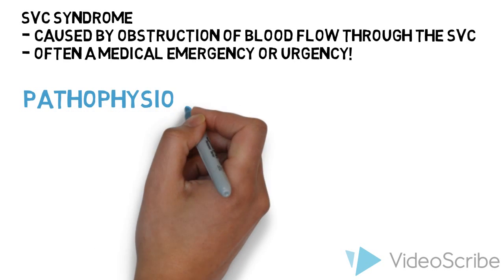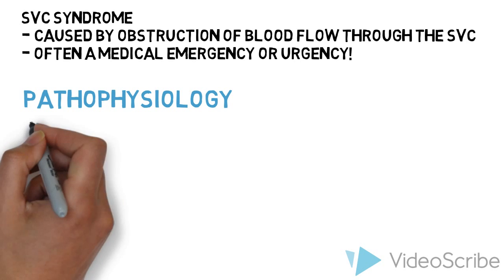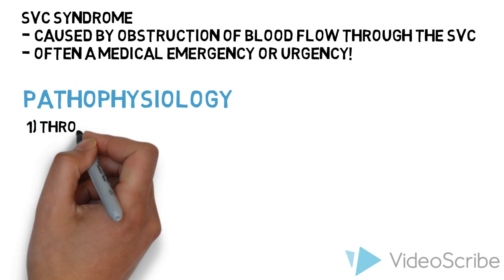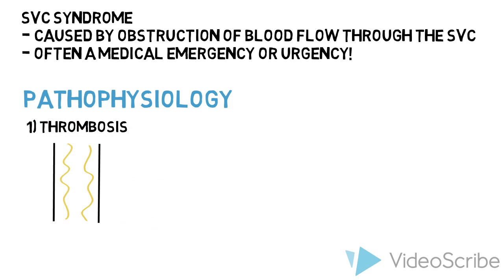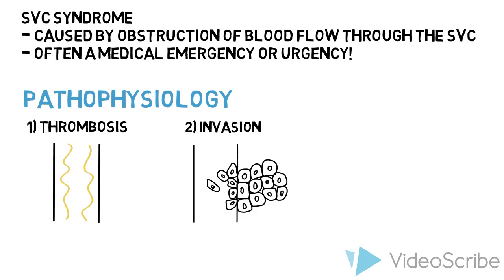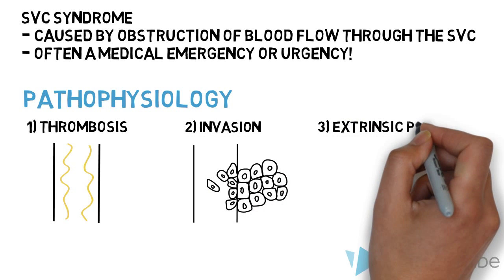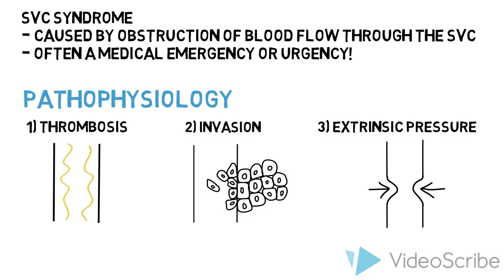Interruption of blood flow in the superior vena cava can be caused by thrombosis or internal blockage, invasion, or extrinsic pressure exerted by pathology involving nearby anatomical structures.